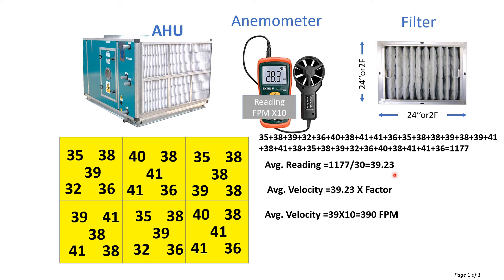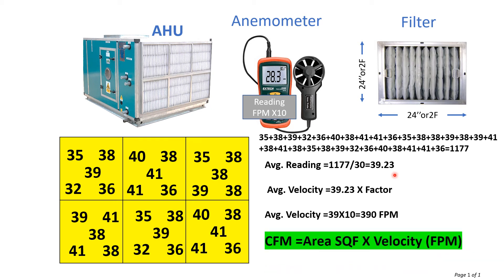The average velocity is 390 feet per minute, and what we need to calculate is CFM — cubic feet per minute. This FPM value we need to multiply by the total area of the AHU suction side. To calculate the area of the suction side, we calculate the area of one filter and then multiply it by the number of filters. Here we have a 2-foot by 2-foot filter, so the area is 2 × 2 = 4 square feet, and 4 square feet × 6 filters gives the total area of the suction side.